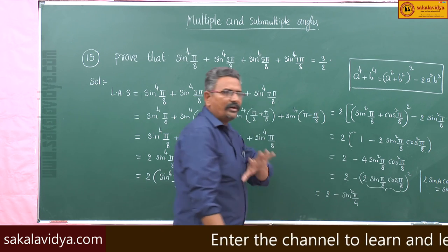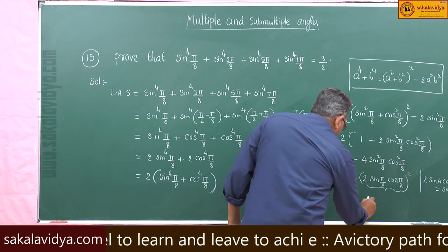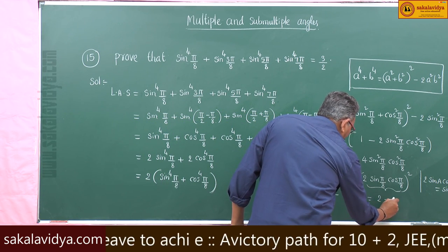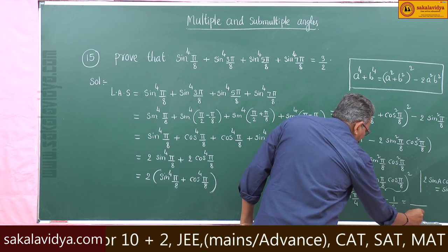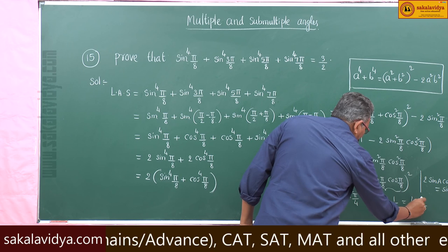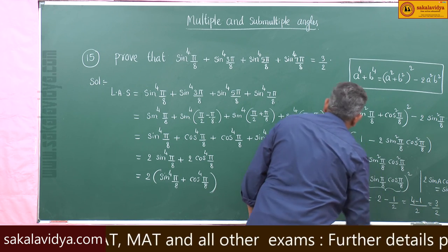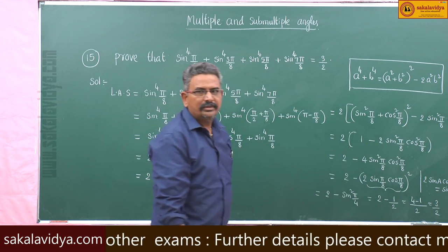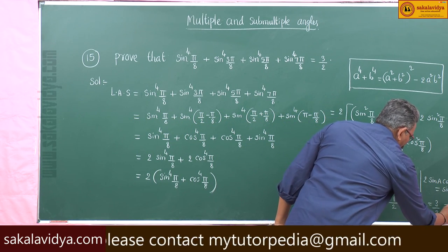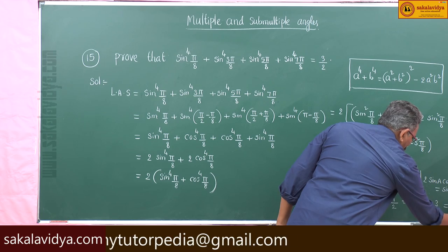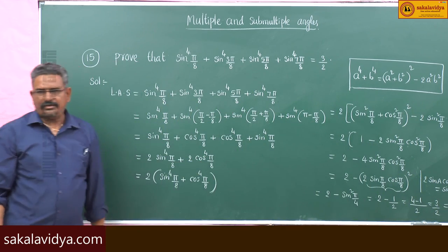We know sin 45° = 1/√2. So this equals 2 − (1/√2)² = 2 − 1/2. Taking the LCM: (4 − 1)/2 = 3/2, which is the required RHS value. Hence, LHS = RHS, and the identity is proved.